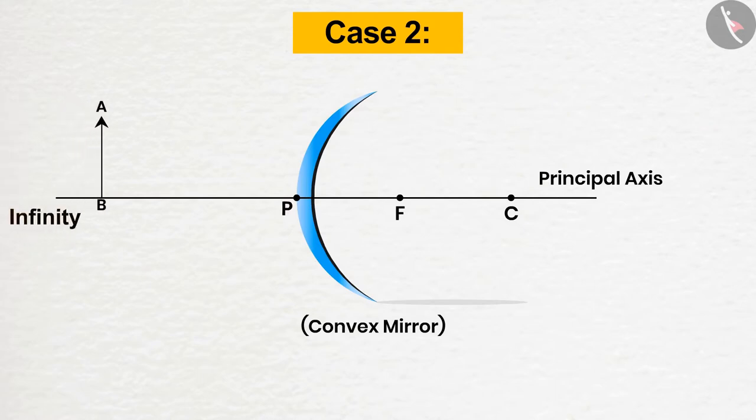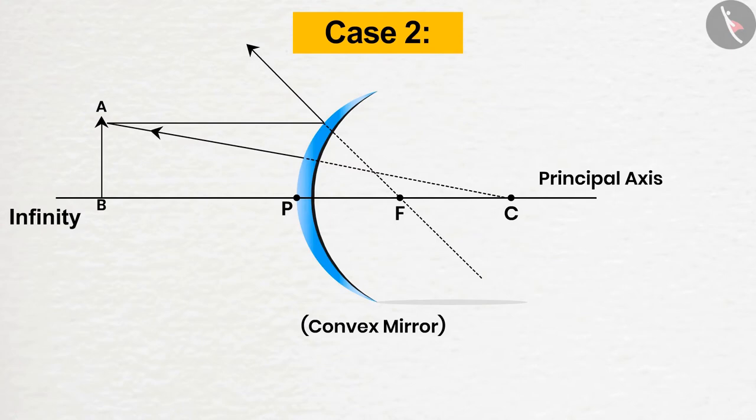Case 2: In the second case, the position of the object will be in between the infinity and the pole. In this case as well, the rays of light will be diverged after reflection. But from the rule of 2 plus 4, the image appears to be formed behind the mirror between the pole and the focus. Here too, the image is smaller in size than the object and virtual and erect in nature.